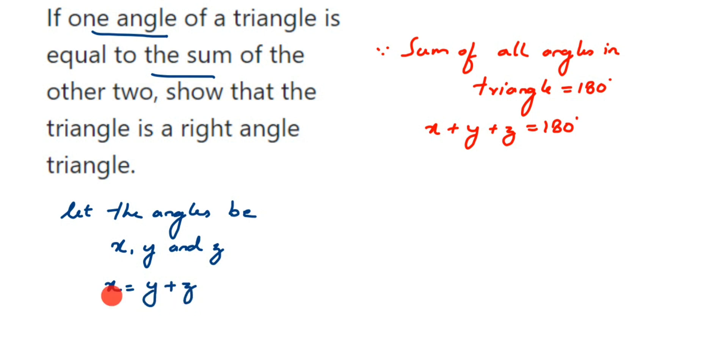In place of y and z, I'm going to put x, because I know the sum of two angles, from the question, if I add two angles that is equal to the third angle. Right? So x plus, in place of y plus z, I'm going to put one more x. That equals 180 degrees.